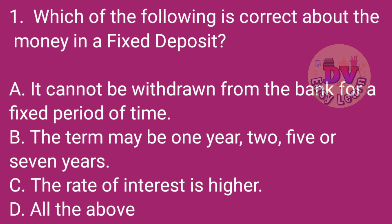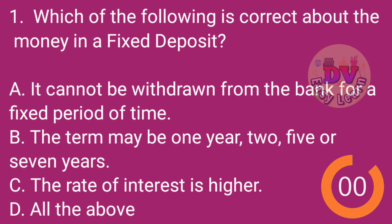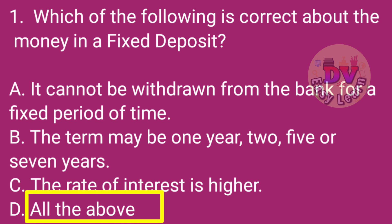Question No. 1. Which of the following is correct about the money in a fixed deposit? Correct answer: all of the above. It cannot be withdrawn from the bank for a fixed period of time. The term may be 1 year, 2, 5, or 7 years. The rate of interest is higher.